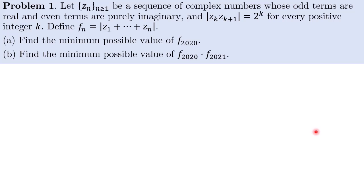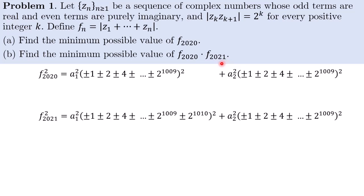Right now, let us move on to part B. So part B is to find the minimum possible value of F2020 times F2021. So same as before, I can write F squared as real part squared plus imaginary part squared.